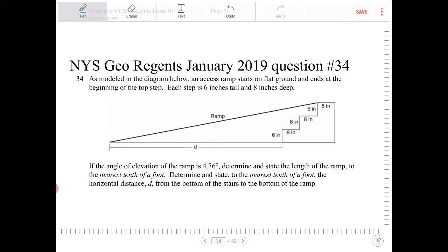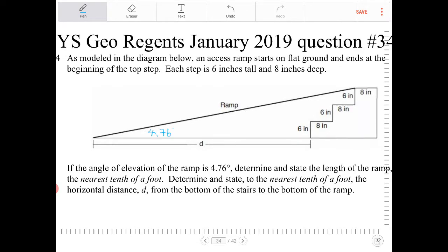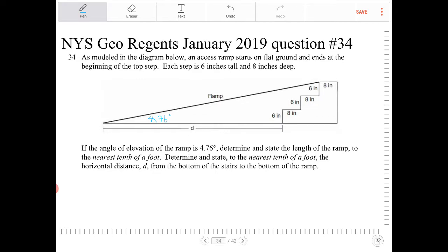If the angle of elevation of the ramp is 4.76 degrees, determine and state the length of the ramp to the nearest tenth of a foot, and determine and state to the nearest tenth of a foot the horizontal distance d from the bottom of the stairs to the bottom of the ramp.